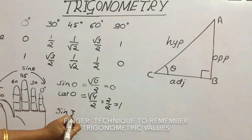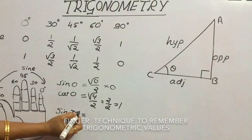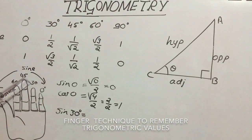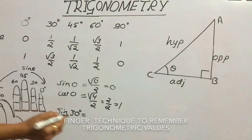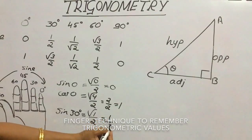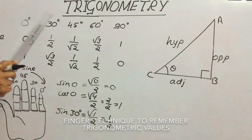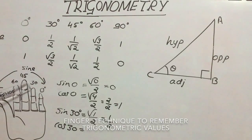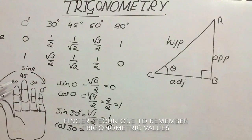For sin 30, consider the ring finger and count fingers to its right — only one remains. So sin 30 = √1/2 = 1/2, which matches the table. For cos 30, move anticlockwise and count fingers to the left of the ring finger — there are 3. So cos 30 = √3/2, which also matches the table.